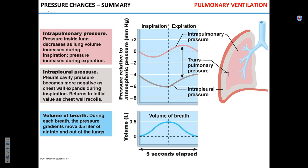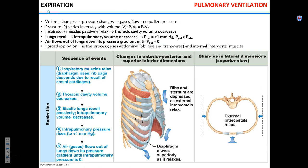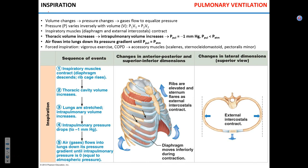Two fundamental principles of pulmonary ventilation: first, gas goes from higher pressure to lower pressure — always. Second, pressure changes follow volume changes — this relationship is also called Boyle's Law, which describes the relationship between pressure and volume in a closed chamber.